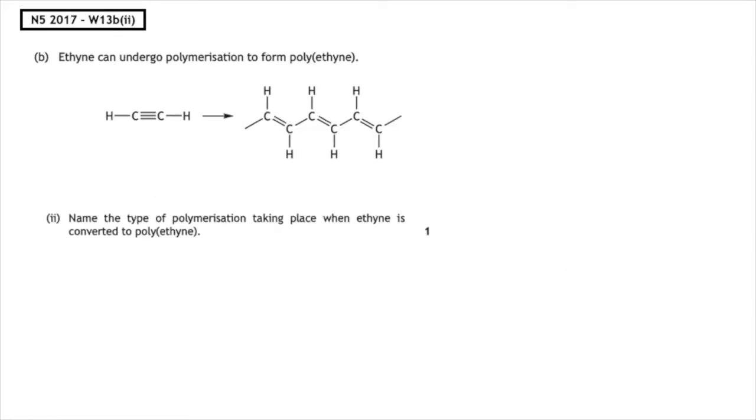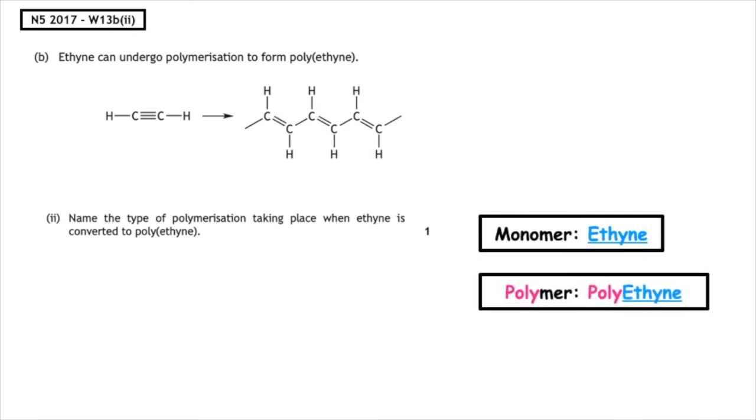This past paper question is from the National 5 2017 written 13B part 2. Ethene can undergo polymerization to form polyethene. Name the type of polymerization taking place when ethene is converted to polyethene. Now the name of the monomer is ethene, the polymer is polyethene, and we know if it has carbon to carbon double bonds, or in this case carbon to carbon triple bonds, they will undergo addition polymerization.